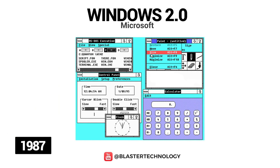The second version of Windows was launched in 1987, being more popular than the first version due to Microsoft Word and Excel applications. At the same time, this version included new features such as overlapping windows, resizable windows, keyboard shortcuts, and support for VGA graphics.